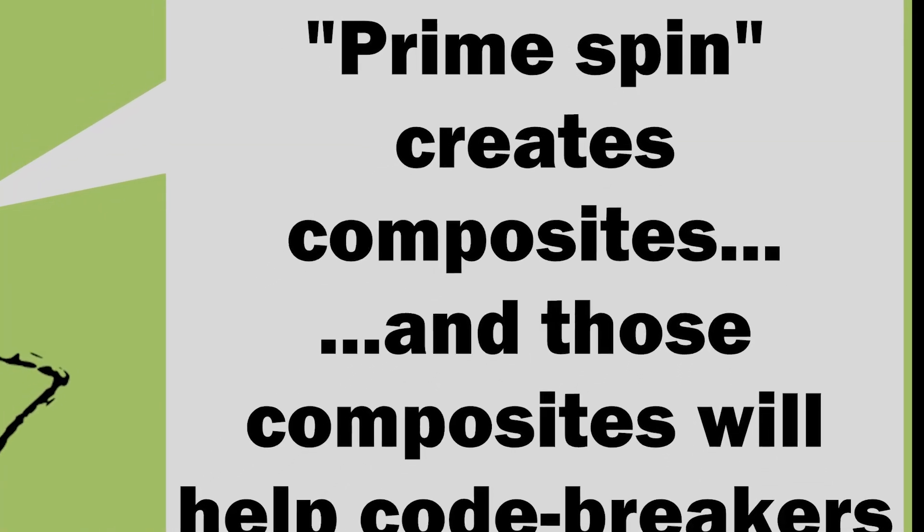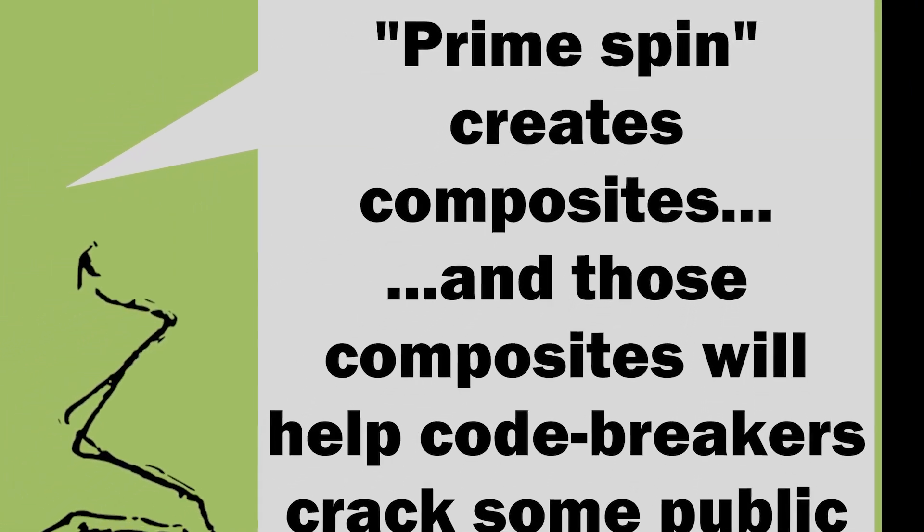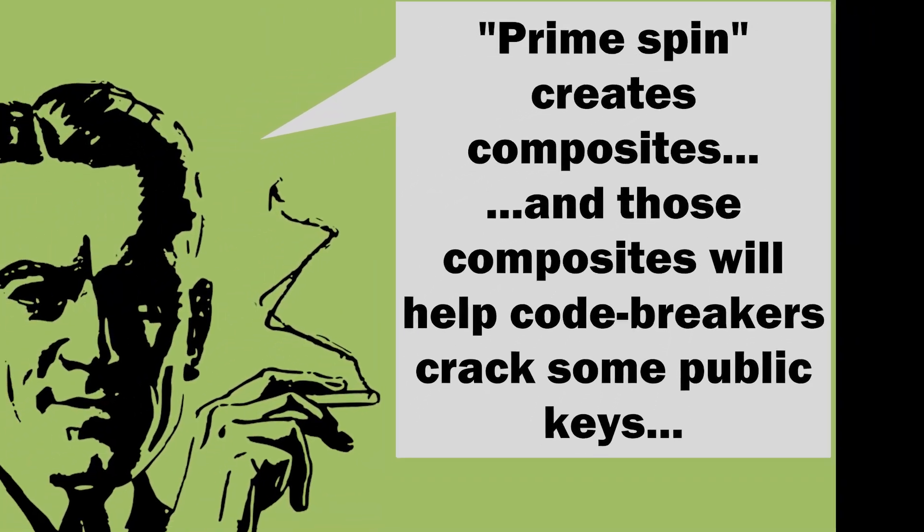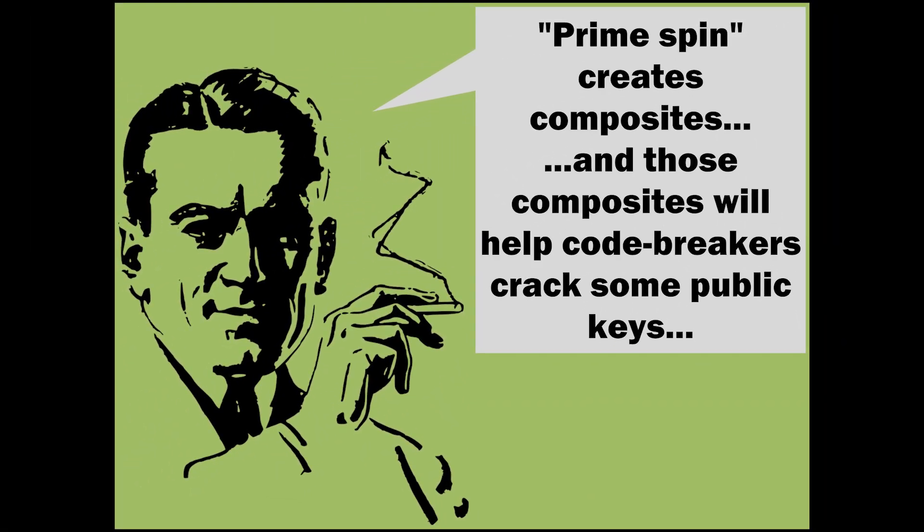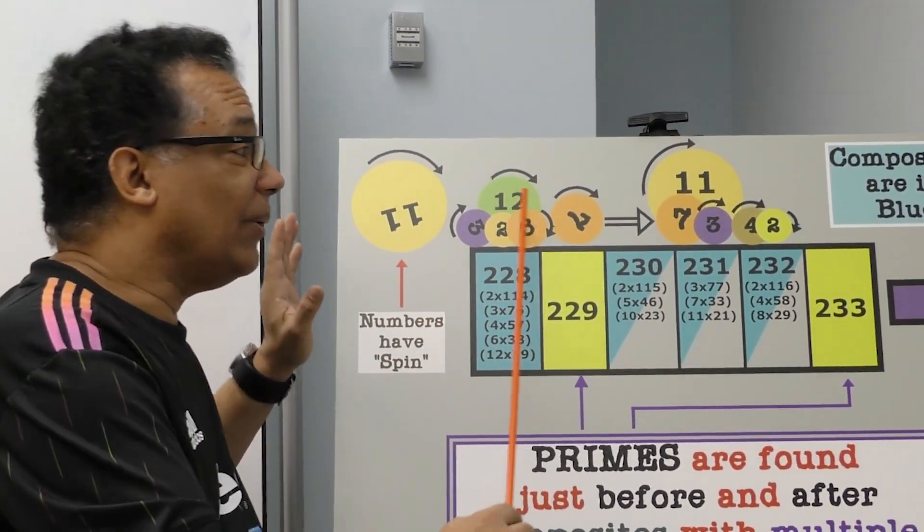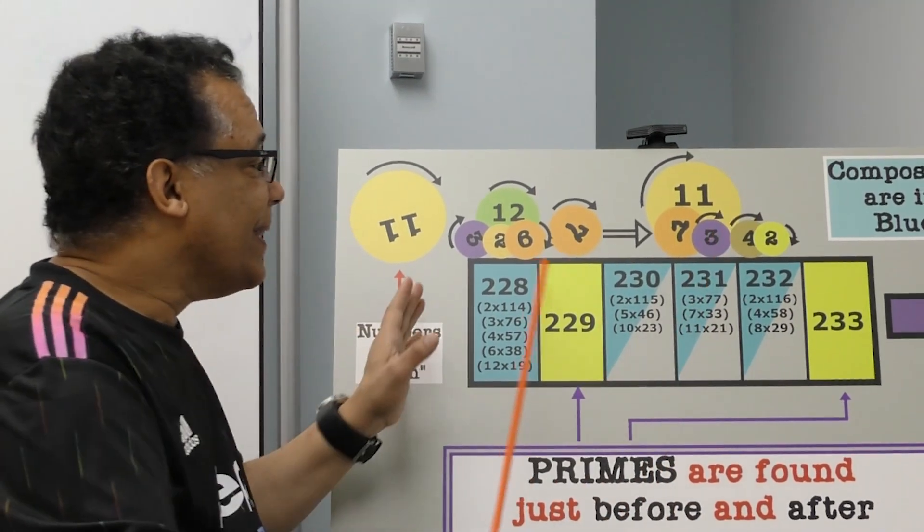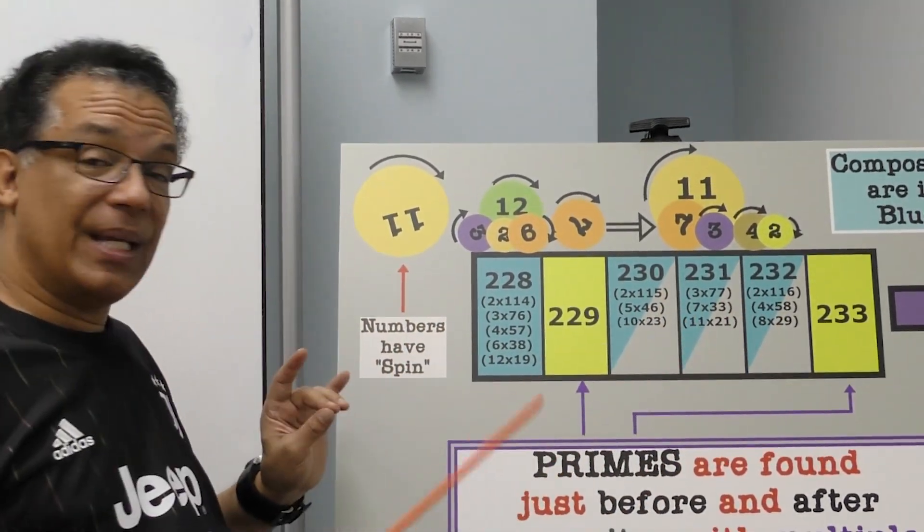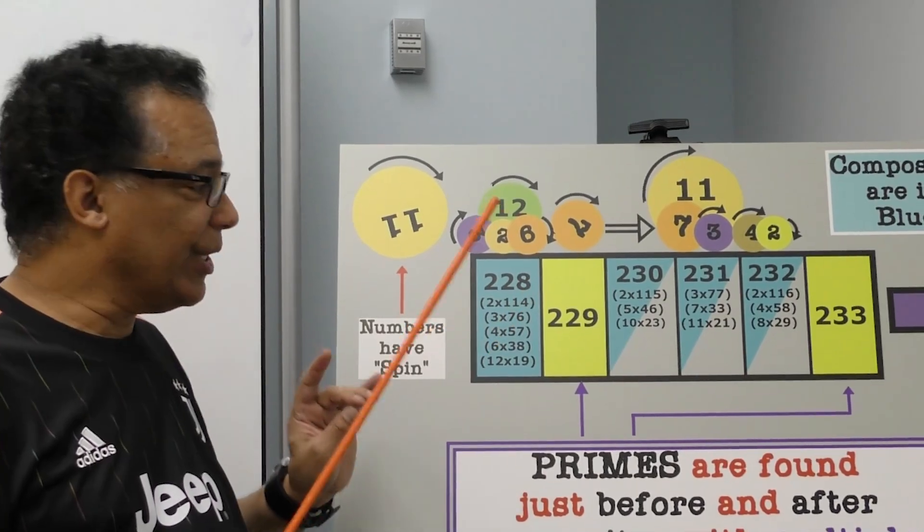Prime spin creates composites, and those composites will help code breakers crack some public keys. So numbers have spin, and as they're rolling like bowling balls down the lane, they stop at particular numbers.